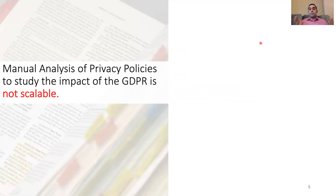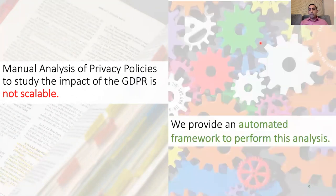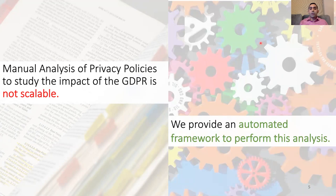A thorough study of the GDPR's impact on the landscape of privacy policies requires an in-depth analysis of a large number of privacy policies. Obviously, such a manual analysis does not scale. This paper meets this challenge by providing a main contribution: we provide an automated framework to analyze privacy policies at scale. Using this automated framework, we show results by studying how privacy policies changed before and after the enforcement of the GDPR.